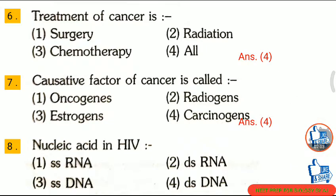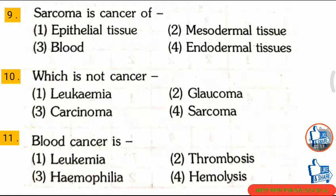Question 8: The nucleic acid in HIV is — first, ss RNA; second, ds RNA; third, ss DNA; fourth, ds DNA. The correct answer is option 1: ss RNA.